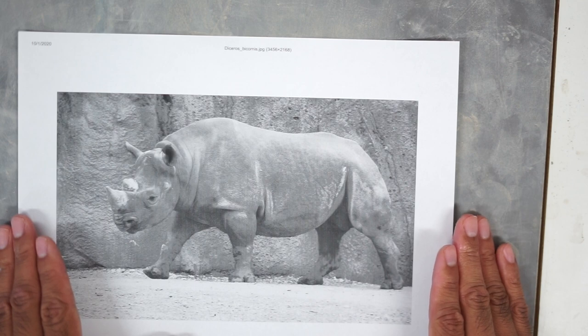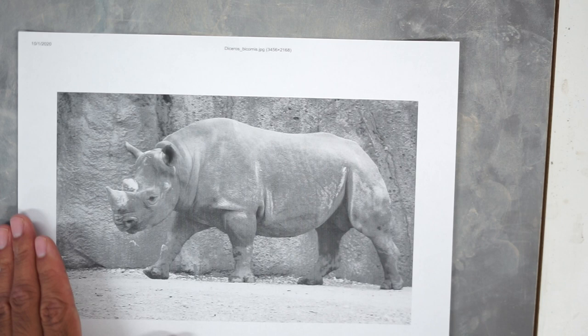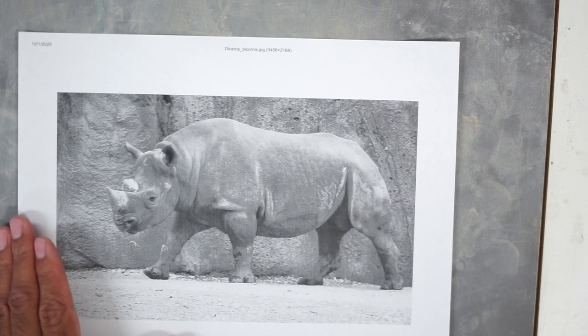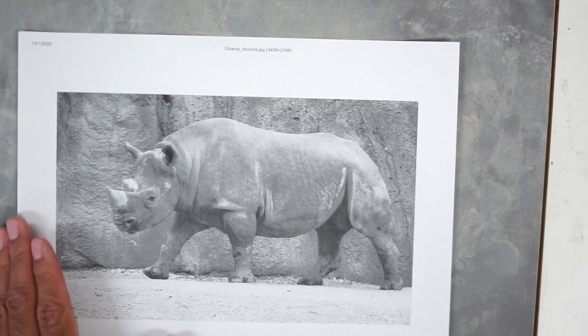Another thing I would discourage anyone from doing is if you have an animal that has a long neck, like a giraffe, you don't want to combine those two pieces together. When I say two pieces, you have the head and neck which will be one piece, and then the body and legs. You'll create them in two different parts.